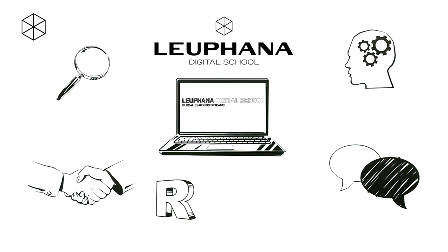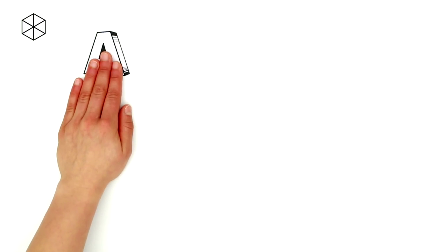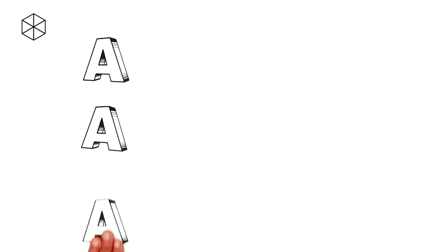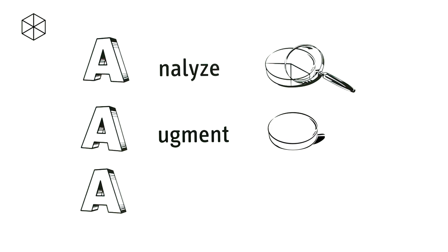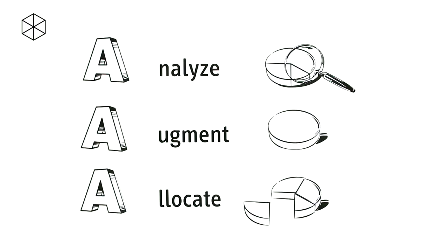This approach is called Resource Oriented Negotiation, or for short, RON. At the center of this course, you'll learn the so-called AAA technique: analyze, augment and allocate resources in negotiations on Commons.